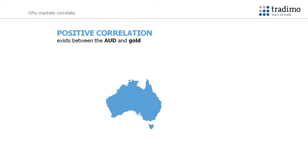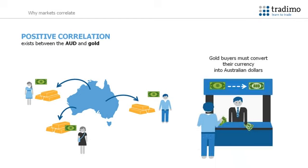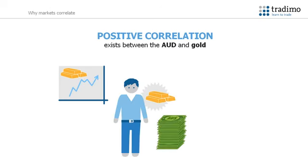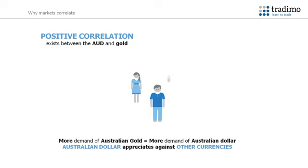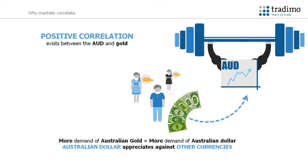Australia is a large producer of gold exports to the global market. In other words, buyers from other countries will buy gold from Australia. In order to do so, these buyers must first convert the currency they are using into Australian dollars. If the price of gold increases, a buyer of gold will then need to acquire more Australian dollars in order to purchase gold. Because there is now more demand for Australian dollars to buy the commodity, the value of the Australian dollar appreciates against other currencies. Hence there is a positive correlation between gold and the Australian dollar.